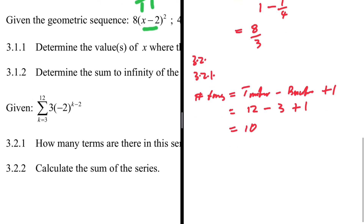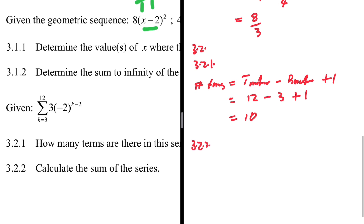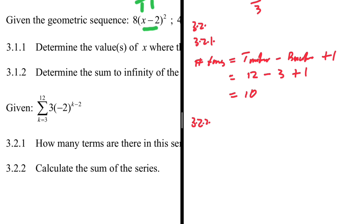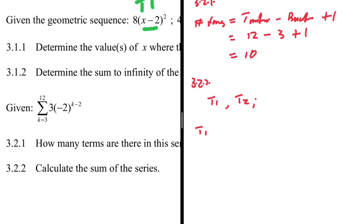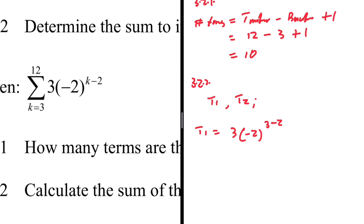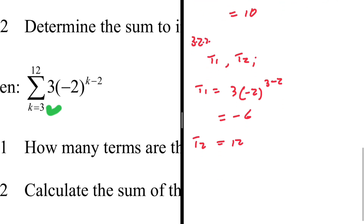For 3.2.2, to find the sum of the series I first find t1 and t2. t1 is found by substituting k = 3: 3 multiplied by (minus 2) to the power (3 minus 2), which gives minus 6. For t2, substituting k = 4 gives 12. So t1 = minus 6 and t2 = 12.